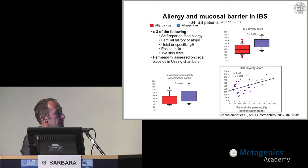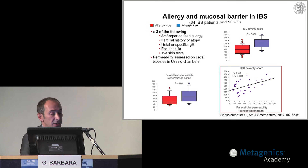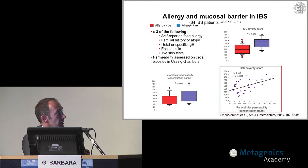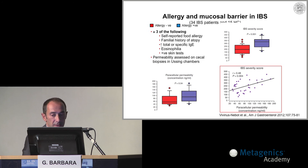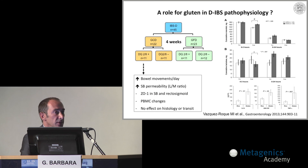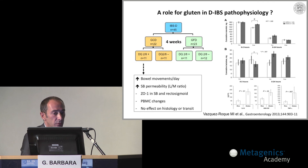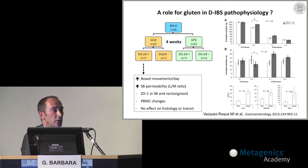Allergy has always been thought to be an important factor in patients with functional GI disorders and IBS in particular. A very nice study showed that patients with IBS have increased permeability, and those with increased permeability also show evidence of allergy, with a nice correlation between increased permeability and symptom severity. Gluten sensitivity is probably another important factor. A study by Michael Murray's group at the Mayo Clinic showed that when IBS patients were challenged with gluten, DQ-2 and DQ-8 positive subjects had increased intestinal permeability along with an increased number of immune cells in the gut.